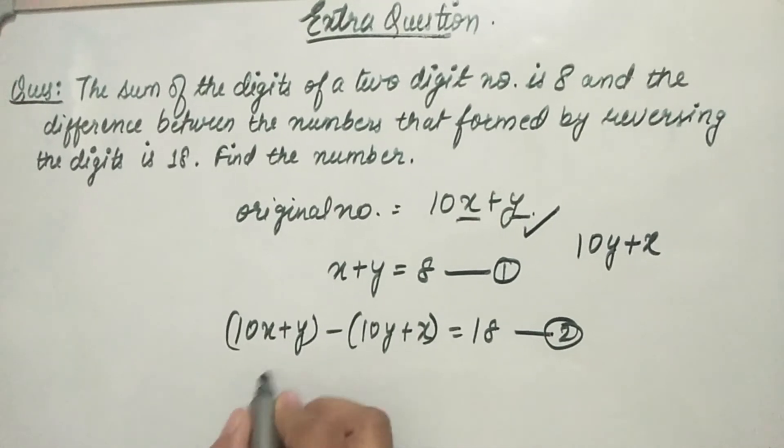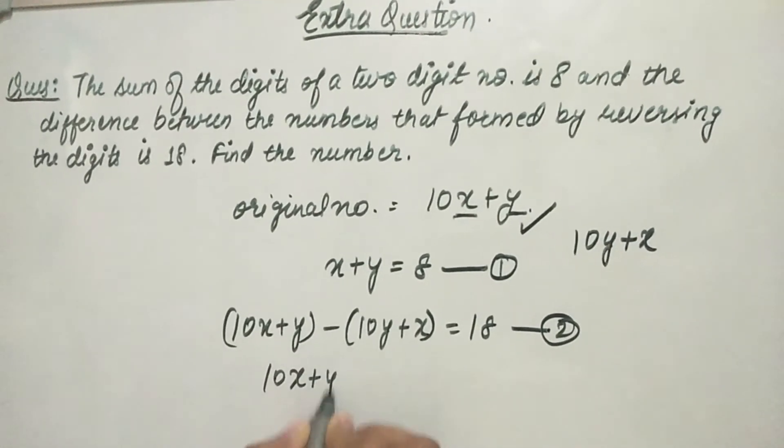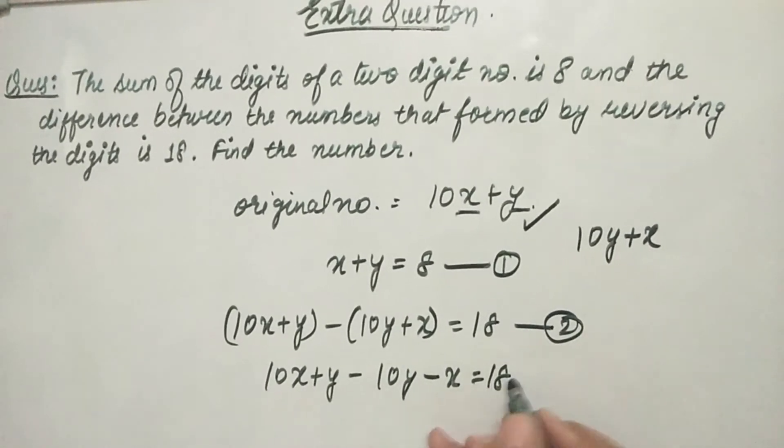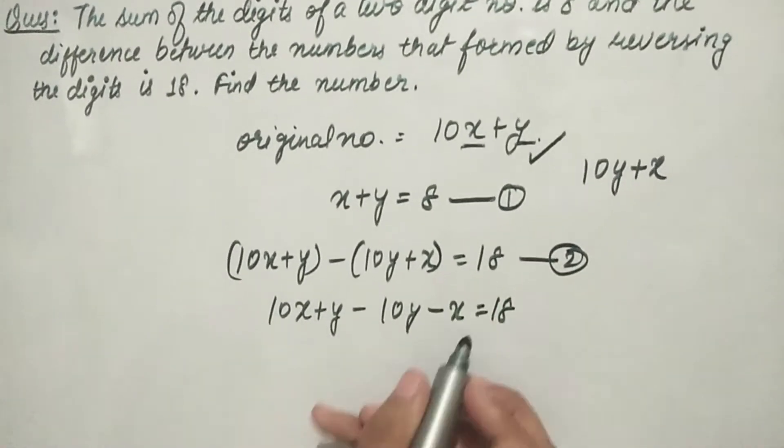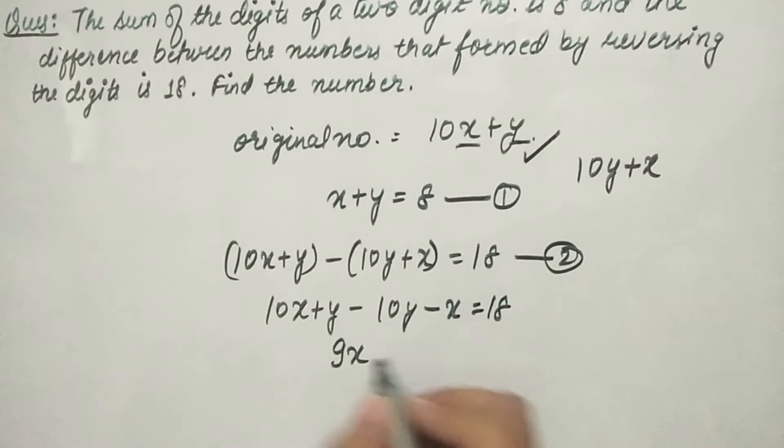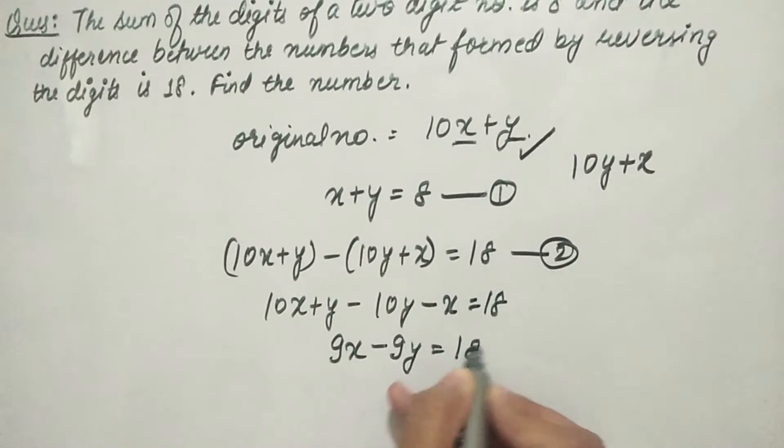Now we solve this equation: 10x plus y minus 10y minus x equals 18. This simplifies to 10x minus x is 9x, and y minus 10y is minus 9y, so 9x minus 9y equals 18.